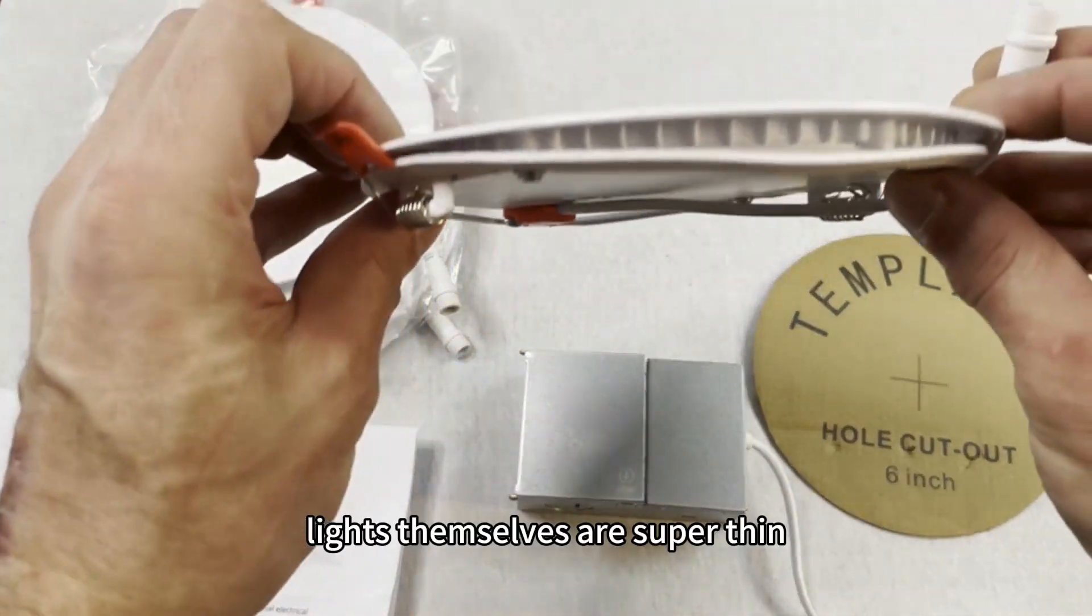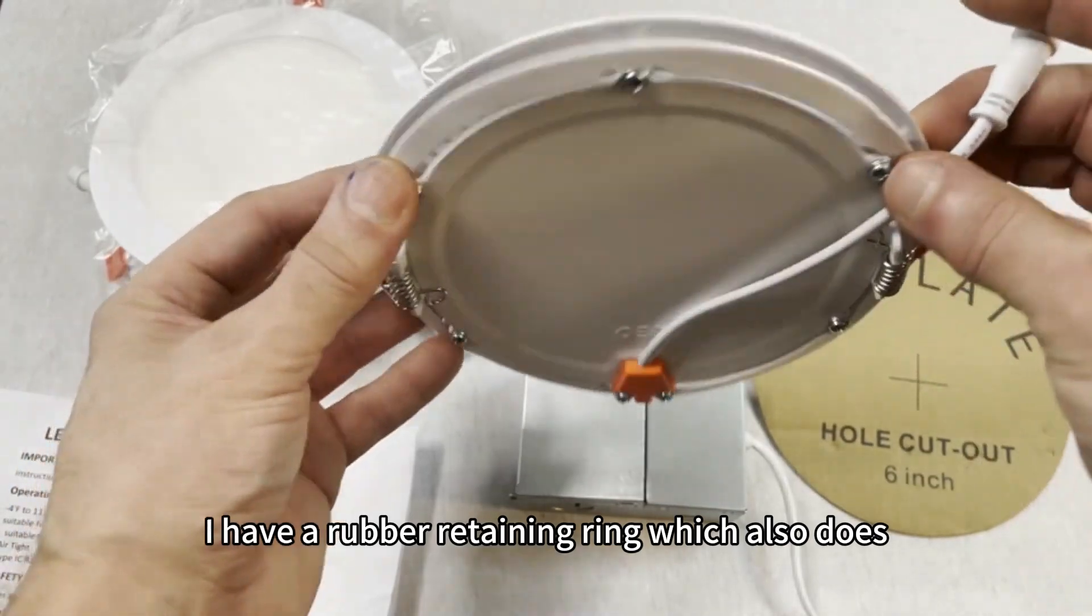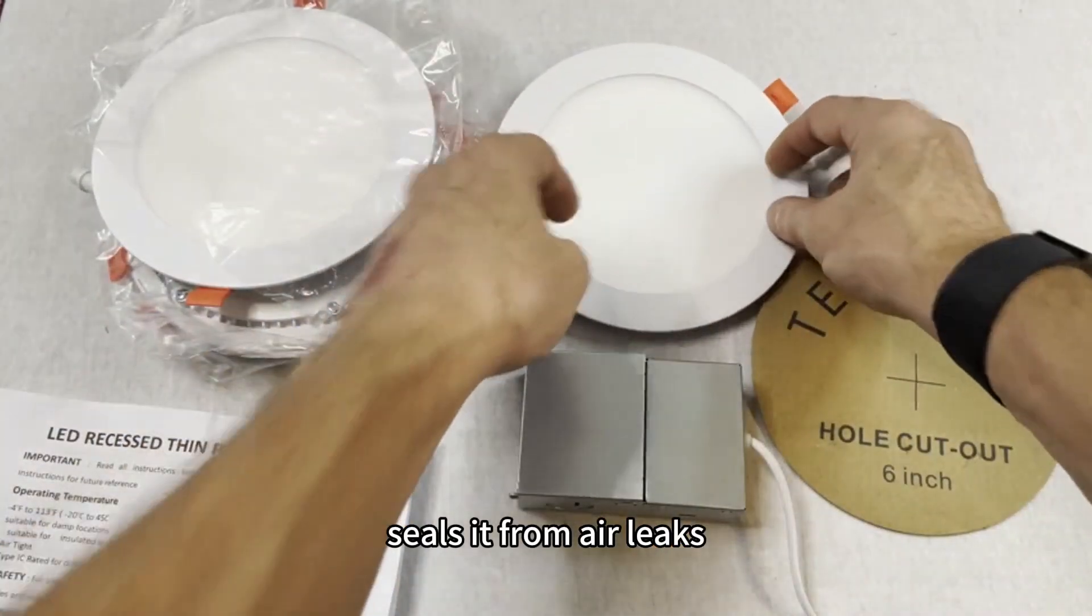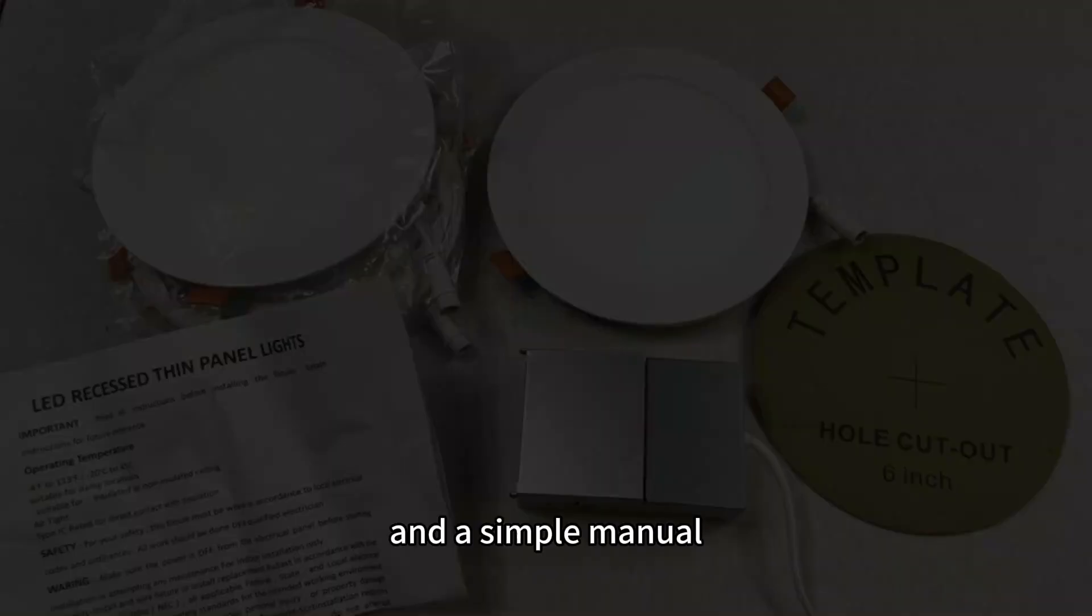The lights themselves are super thin. They have a rubber retaining ring, which also seals it from air leaks, and a simple manual.